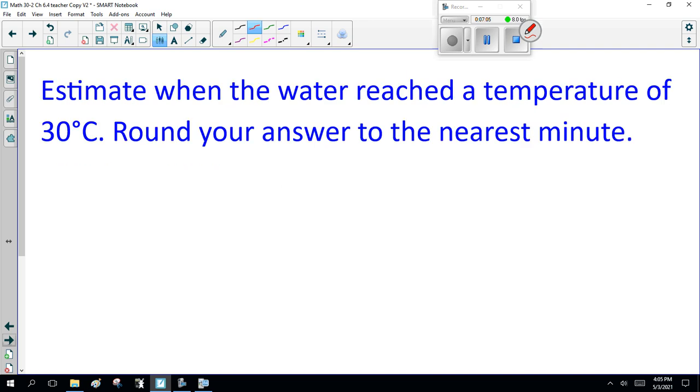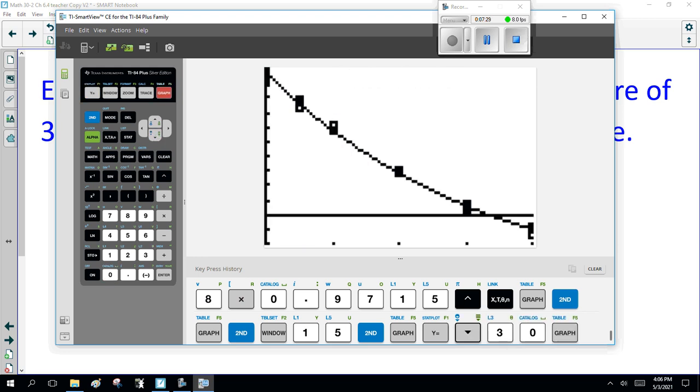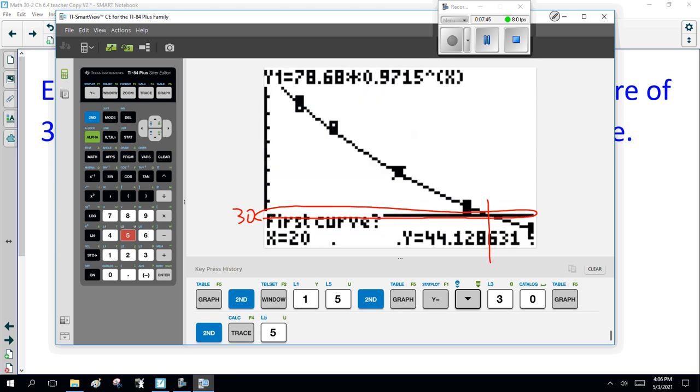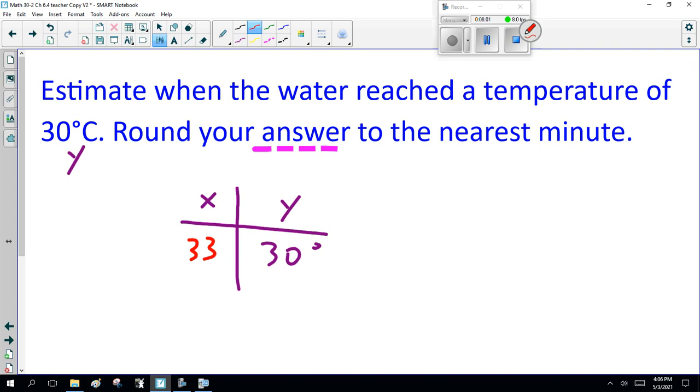Now, the last question. Estimate when the water temperature reached a temperature of 30 degrees Celsius. Round your answer to the nearest minute. Now, this is sneaky because this is Y. Temperature is 30 degrees. What's X? The easy way to do that is Y2 equals 30, graph. And there we go. This is 30 degrees. So, I'm going to use intersect. Second, calculate, 5, intersect. Some people want to be a little closer to the intersect. Doesn't really matter. Enter, enter, enter. 33.3 minutes. So, I would estimate 33 minutes to reach 30 degrees Celsius.